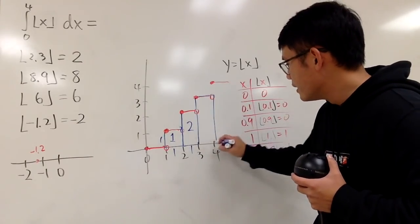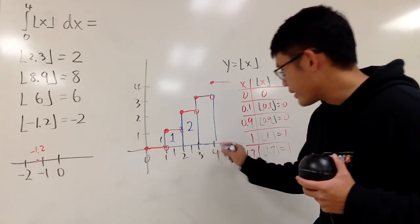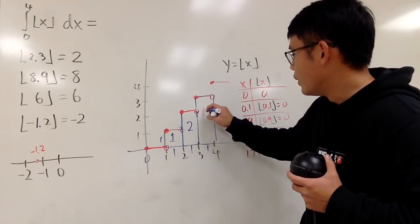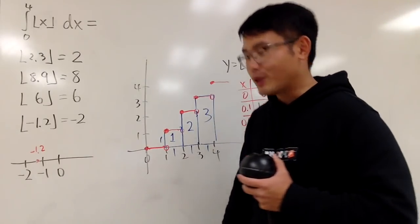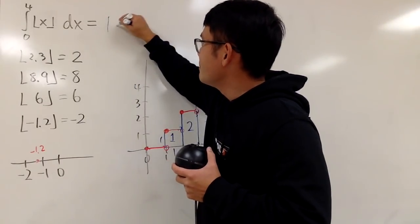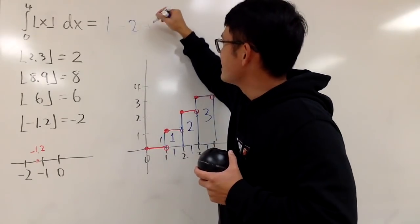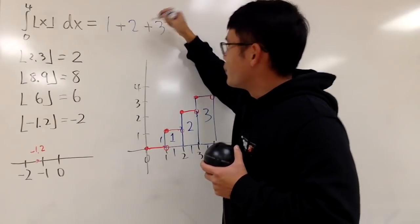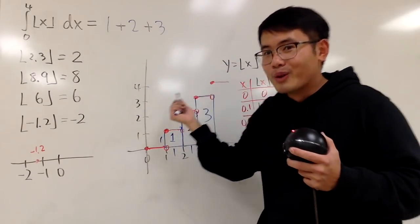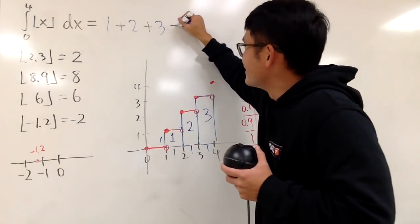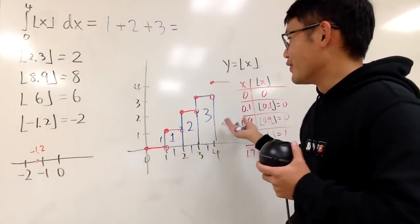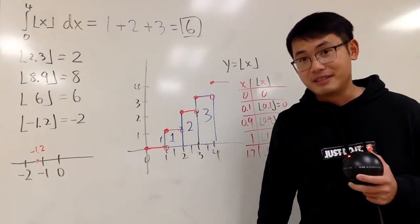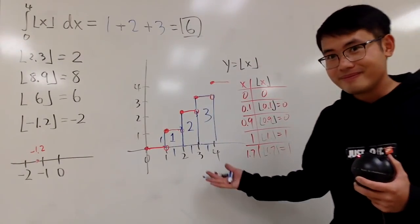And then next, you have this rectangle. The base is 1, the height is from here to here, which is 3, so 1 times 3 is 3. So, what you are doing is, yes, 1 plus 2 plus 3. And yes, this calculus question, we don't have any hardcore integral equations. It's just that you have to know the definition of how things work right here. And of course, 1 plus 2 plus 3, I believe the answer is 6. That's it.